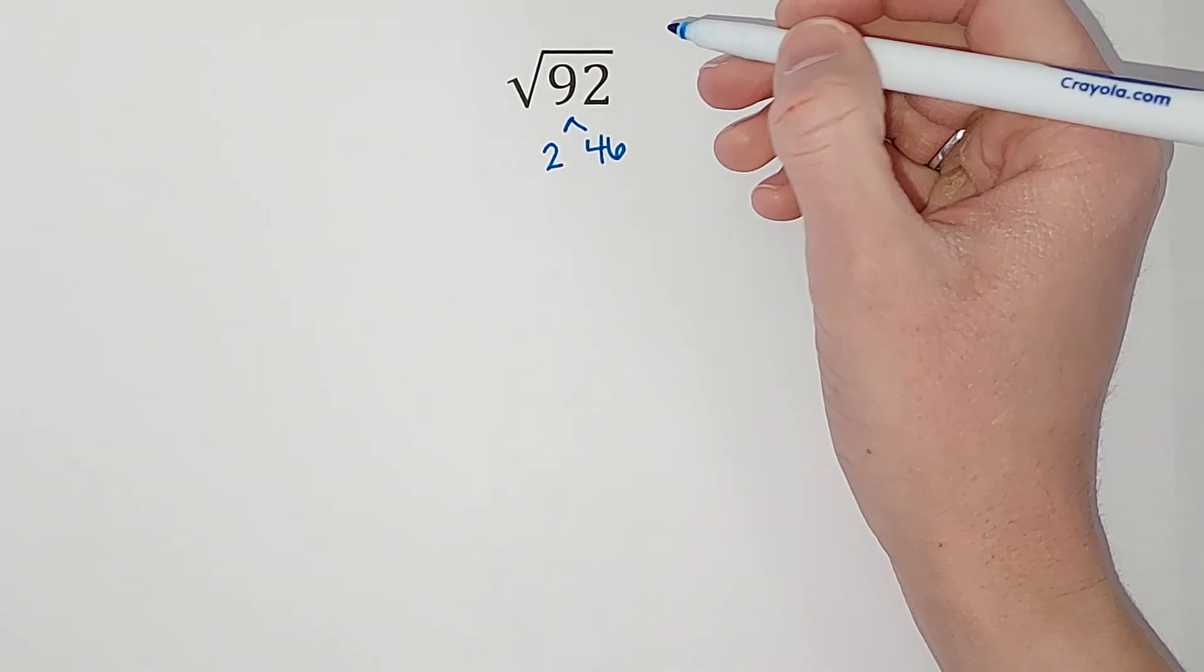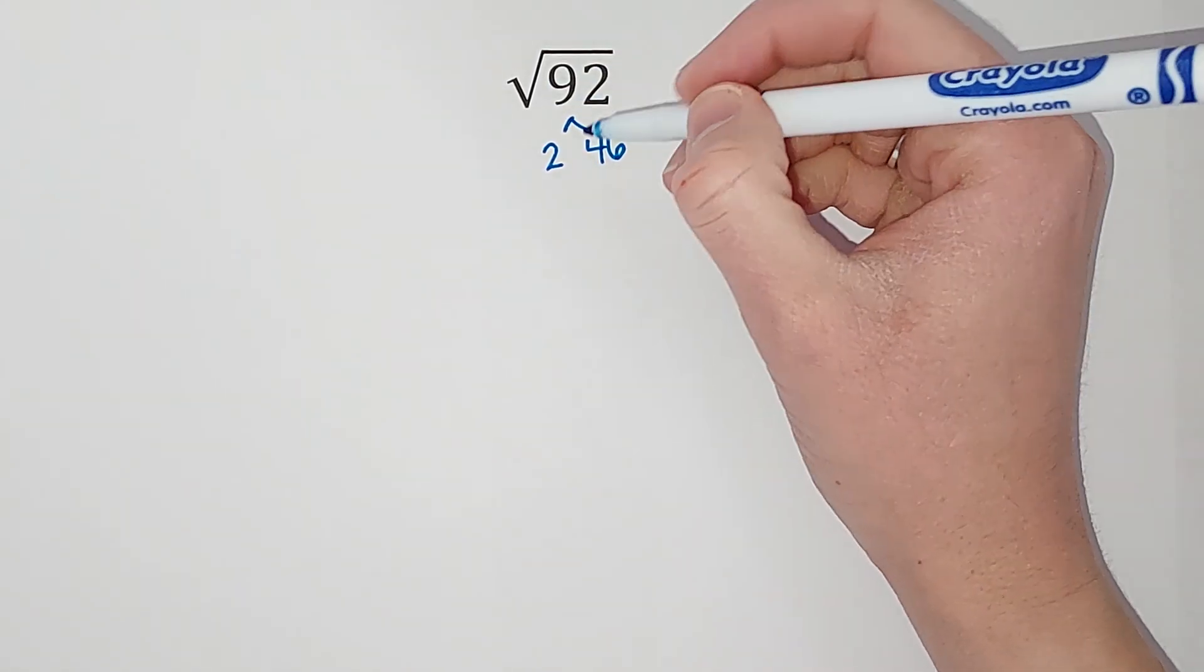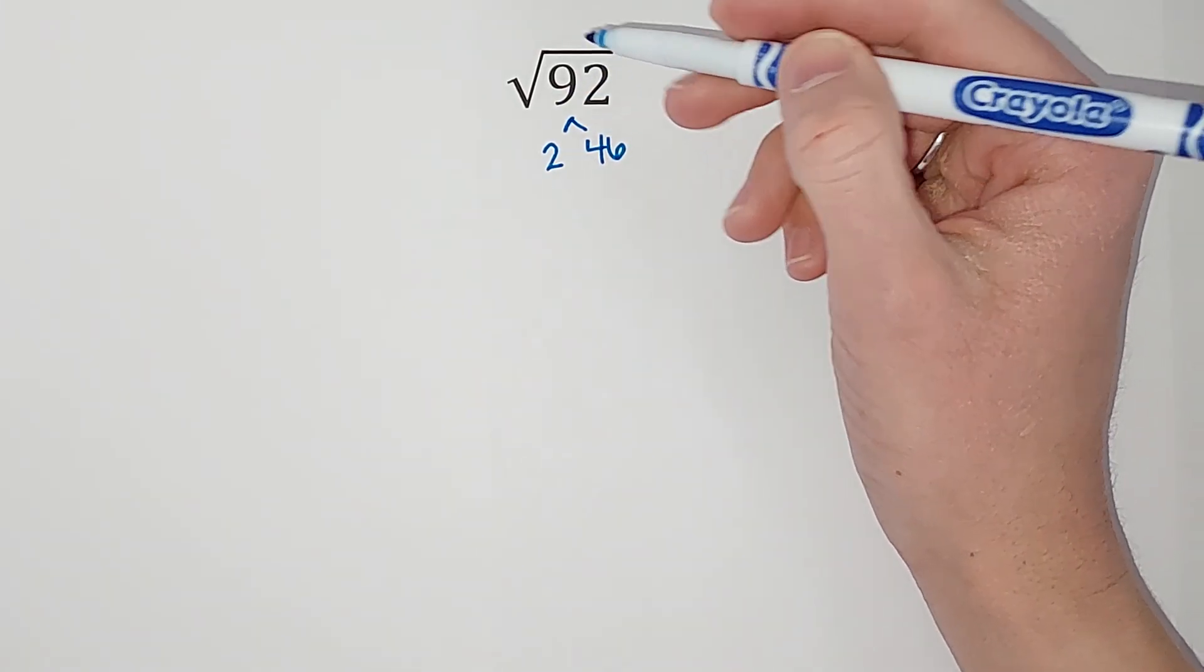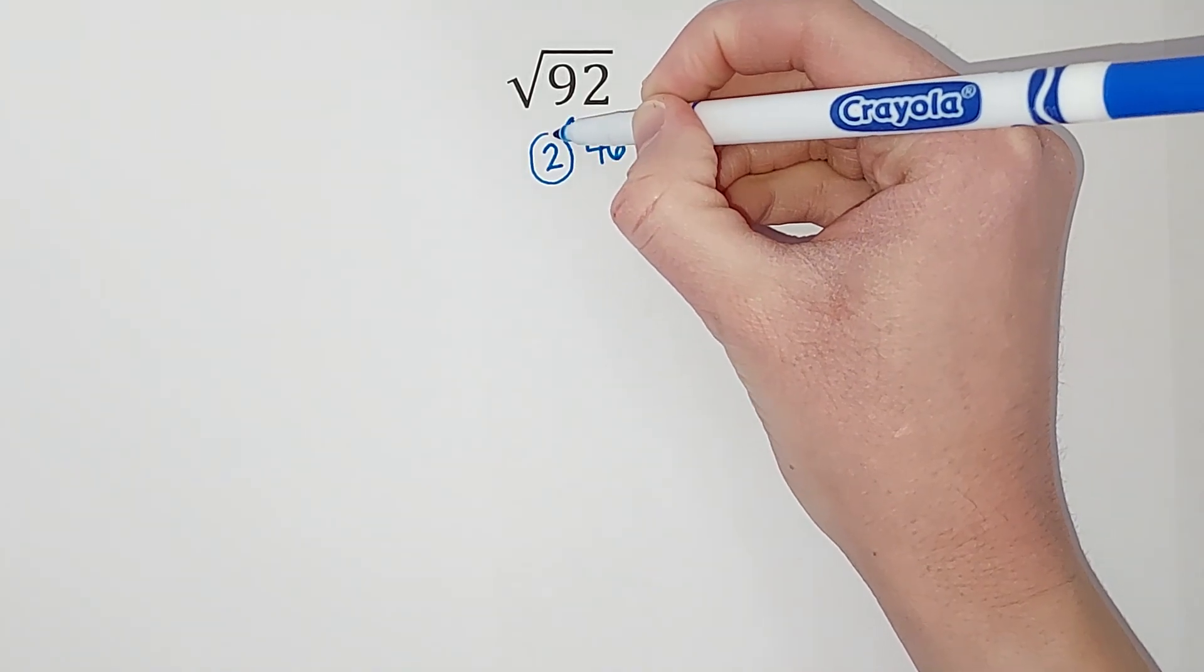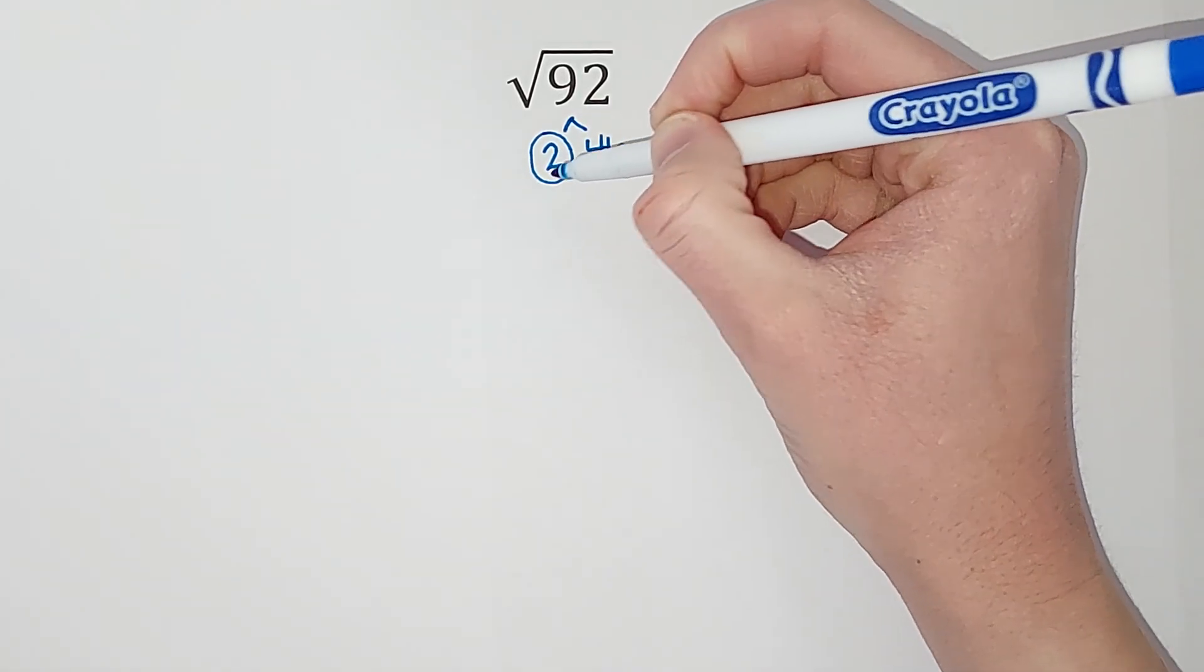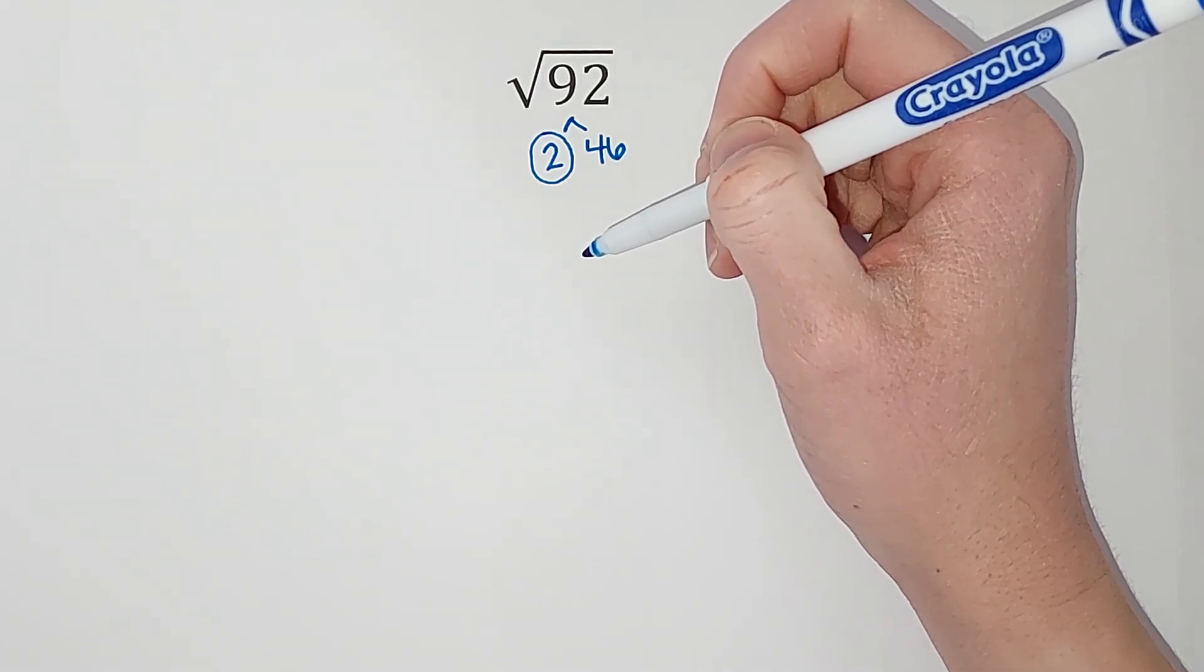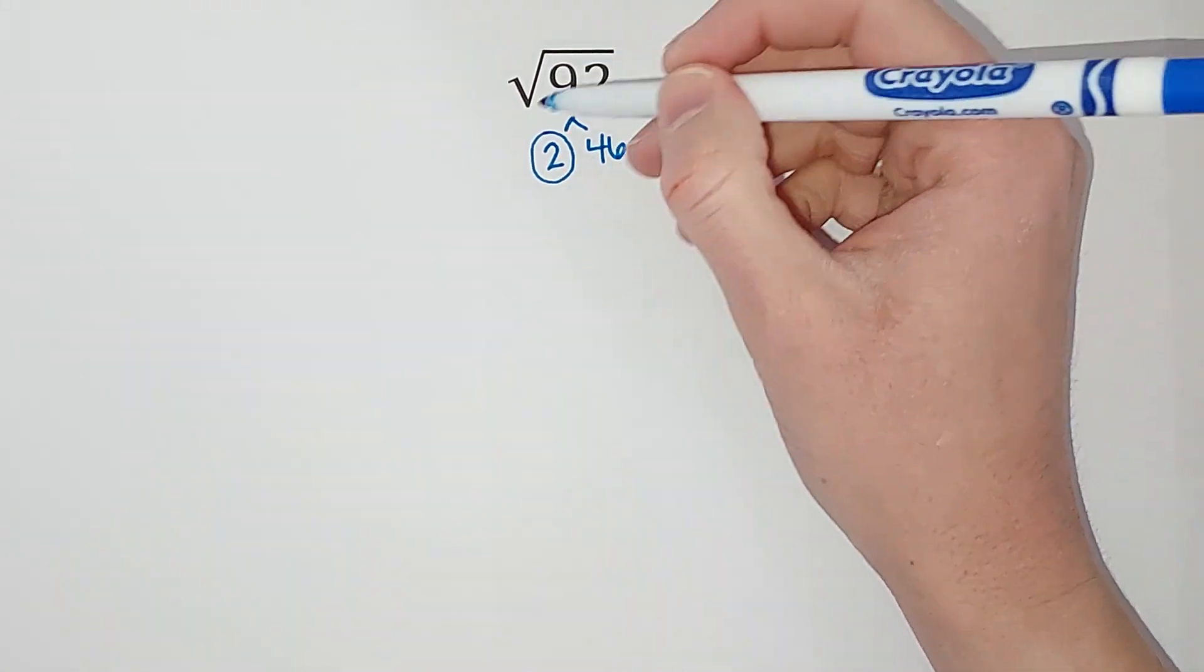Now this is called prime factorization. What I do as I'm doing this, when I get to a number that can't be broken down anymore, I circle it. What I mean by that is the only numbers I could write here to break down 2 would be 1 times 2, and I don't need to break that down. Sorry 1, but we don't need you right now, so I circle that one.